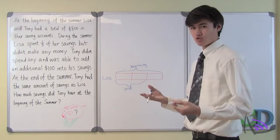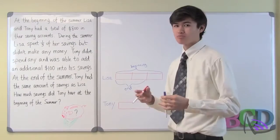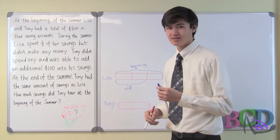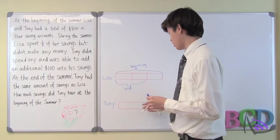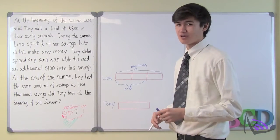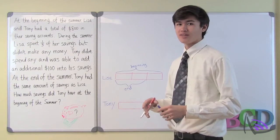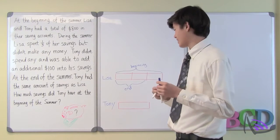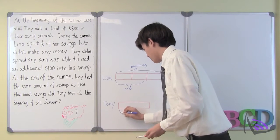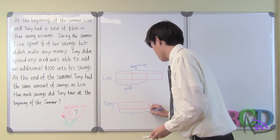Now let's go to Tony. The problem told us that at the end of the summer, Tony and Lisa had the exact same amount of money. So we will use this bar to illustrate how much money Tony had at the end of the summer. It should be the same size as the bar that was used to represent how much Lisa had at the end of the summer. And just like Lisa's bar, we will divide Tony's bar into two equal pieces.